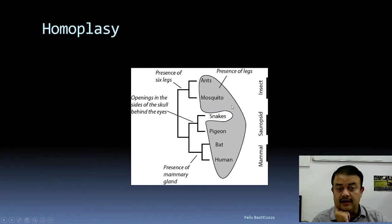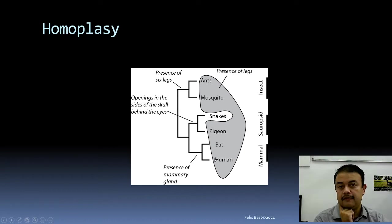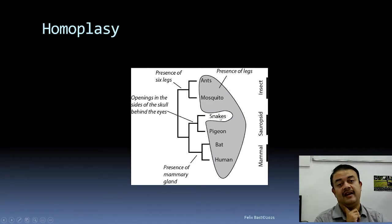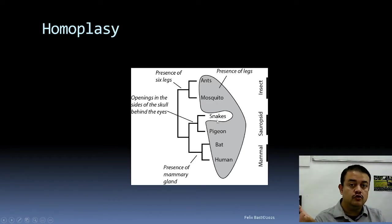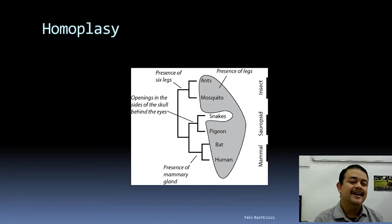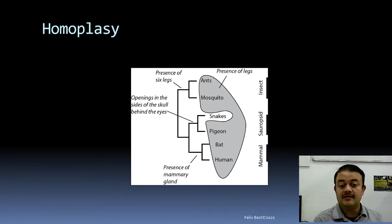Consider this diagram with animals — ant, mosquito, snake, pigeon, bat, and human. Someone might group them as legged and non-legged animals, putting snake in one bucket and all the rest in another. Calling that group 'legged animals' and separating out the snake is a fallacious way to classify them.